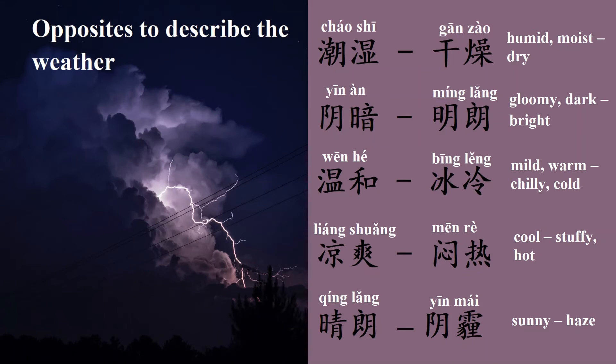Opposites to describe the weather. 潮湿, humid. The opposite of 潮湿 is 干燥, dry. 阴暗, gloomy, dark.